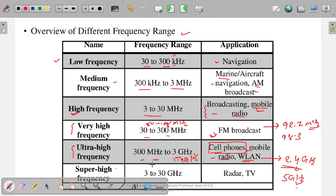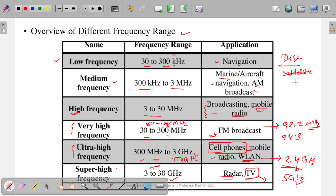Next is super high frequency, from 3 to 30 gigahertz, used for radar and TV communications. This TV communication refers to the traditional antenna, not DISH TV. Previously, TV antennas operated in this range. DISH TV uses satellite communication, and we will cover which frequency DISH antennas operate on when we discuss satellites.